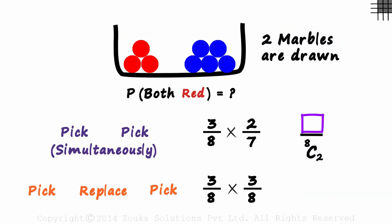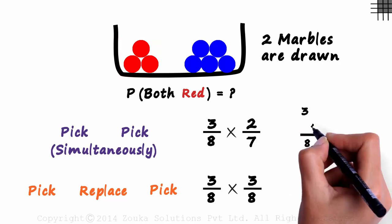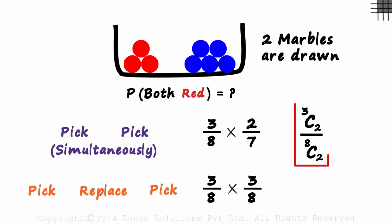And in the numerator, we will have all the favourable outcomes. As both have to be red, they have to be selected from these three red ones only. Selecting two out of three or 3C2. This will also give us 3 over 28 as the probability which is the same as this one.